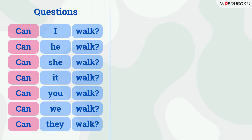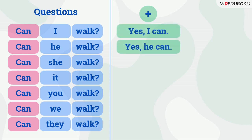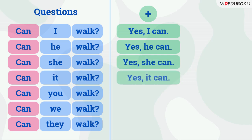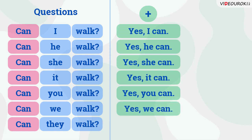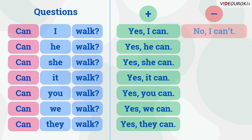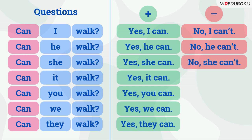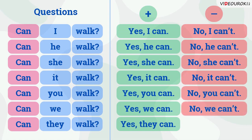If the answer is positive we say: Yes, I can. Yes, he can. Yes, she can. Yes, it can. Yes, you can. Yes, we can. Yes, they can. If the answer is negative we say: No, I can't. No, he can't. No, she can't. No, it can't. No, you can't. No, we can't. No, they can't.